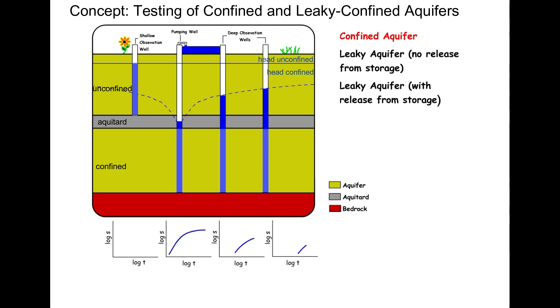There is no drawdown in the unconfined aquifer because there is no flow through the impermeable aquitard. The drawdown curves in the confined aquifer can be represented by the Theis equation.